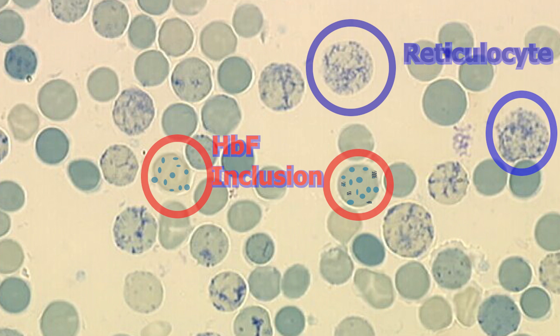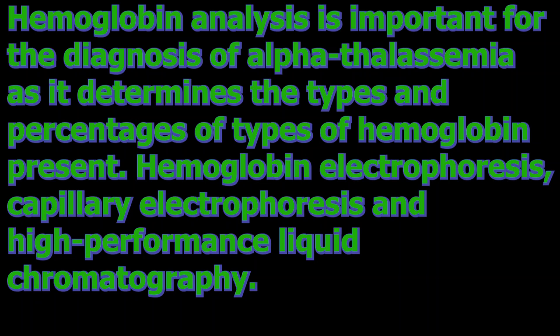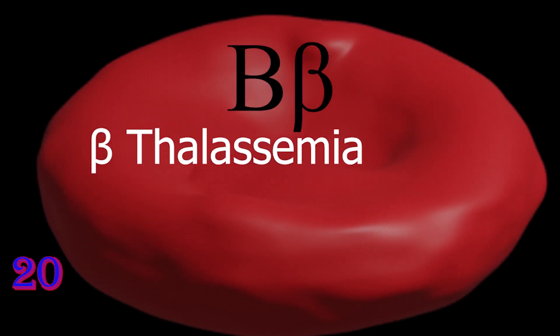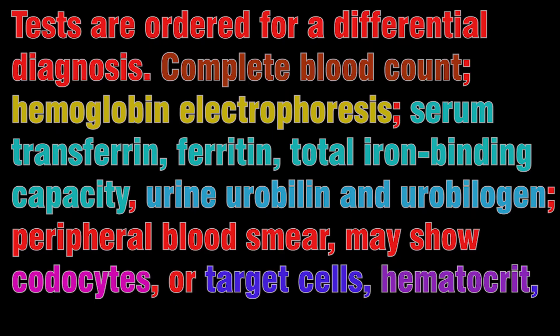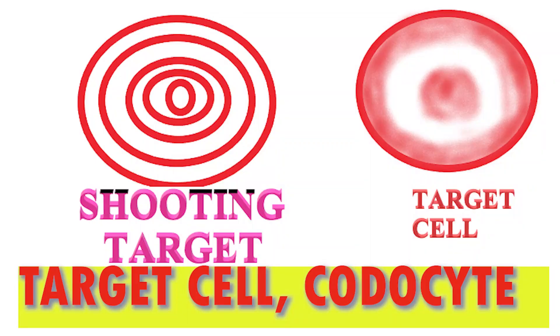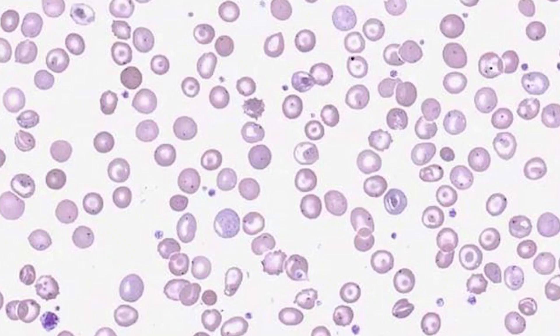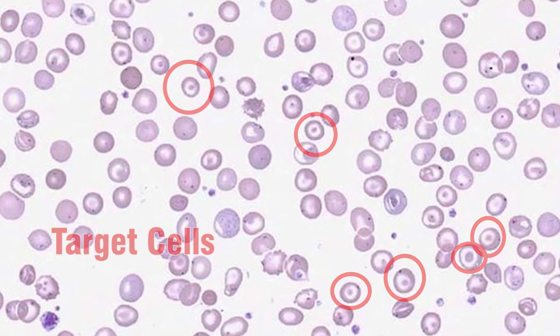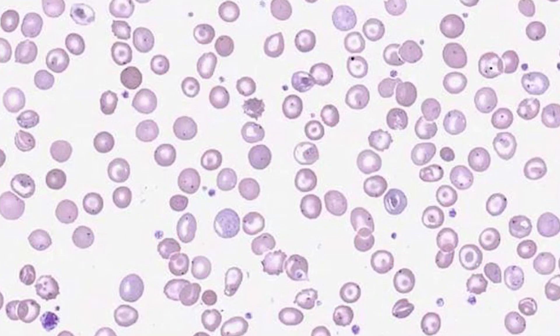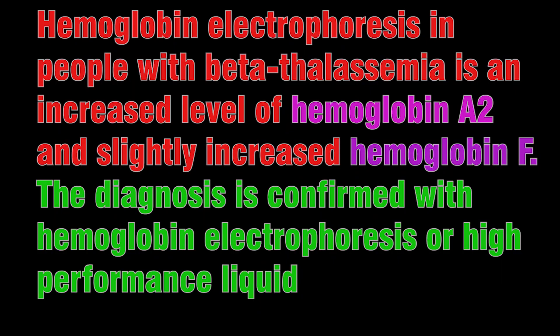Beta thalassemia is a group of inherited blood disorders caused by reduced or absent synthesis of the beta chain in hemoglobin, resulting in severe anemia to clinically asymptomatic individuals. Three main forms have been described according to severity: thalassemia minor, thalassemia intermediate, and thalassemia major.